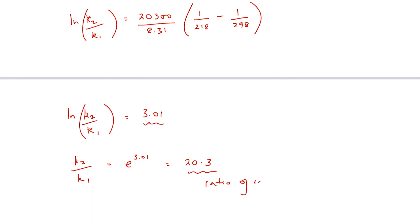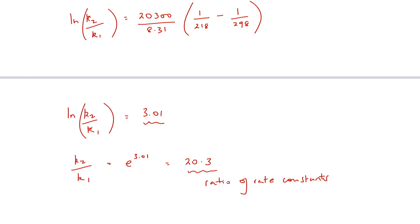Our ratio of rate constants is 20.3. What does that actually mean? It means that at room temperature — the higher temperature, 298 K — our rate constant is 20.3 times greater than it is at minus 55 degrees C. Since concentrations remain the same, rate equals K times our reactants; if our rate constant increases by 20.3 times over that temperature range, so does the rate of the reaction.